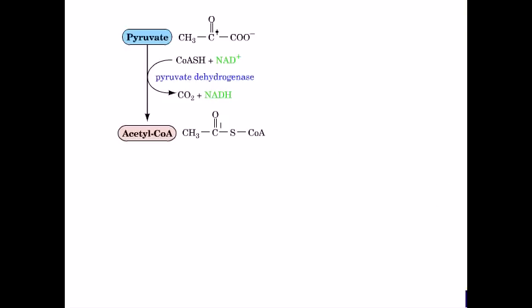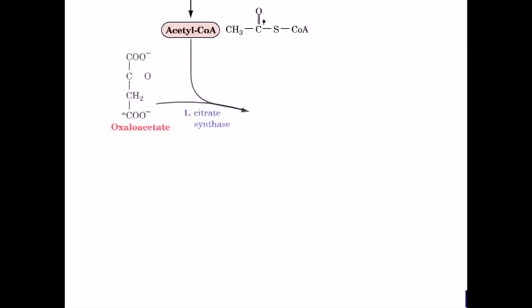Acetyl-CoA enters the citric acid cycle by reaction with oxaloacetate to form citrate. This reaction is catalyzed by citrate synthase (reaction 1) and releases coenzyme A from the structure of acetyl-CoA.